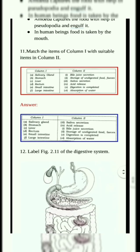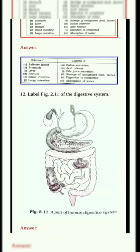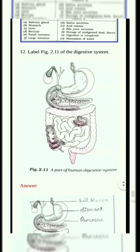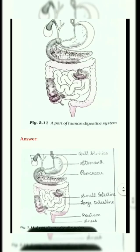Twelfth question. Label figure 2.11 of the digestive system. This is the human digestive system image. Labels: Gallbladder, Stomach, Pancreas, Small intestine, Large intestine, Rectum, Anus.